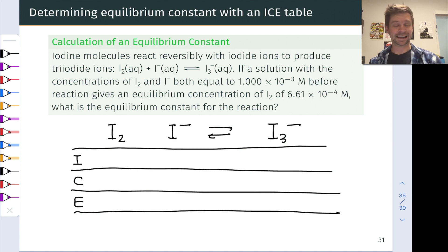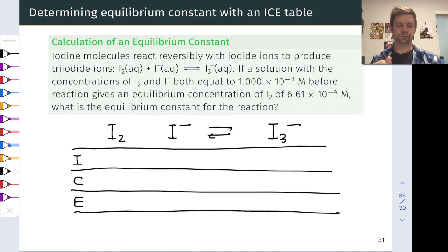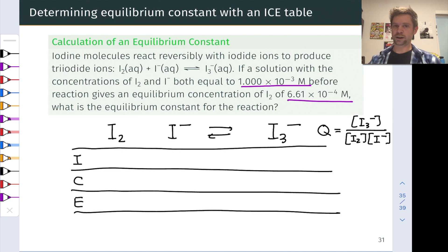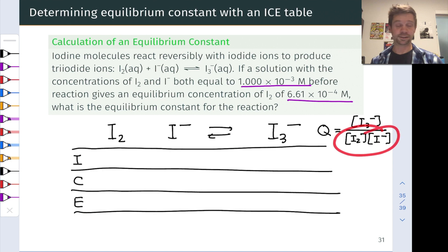I've gone ahead and laid down the ICE table. We've got the reaction up here. Including the reaction arrow is important because it differentiates between the reactants on the left and products on the right. The initial conditions come straight out of the problem. Before we fill those in, let's write the reaction quotient. We're not going to use this immediately, but we'll use it after we've laid down the equilibrium line. We've got products in the numerator, reactants in the denominator, and all the coefficients are 1, so no exponents appear.